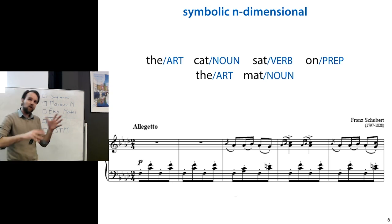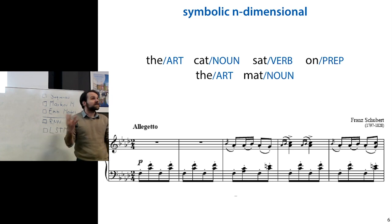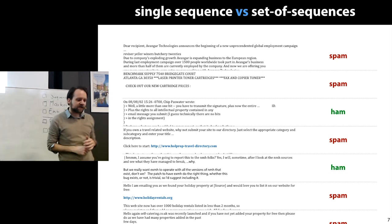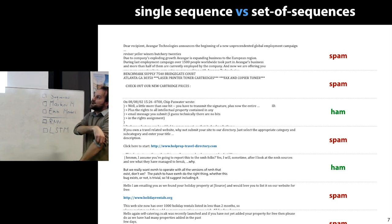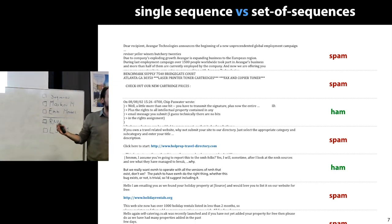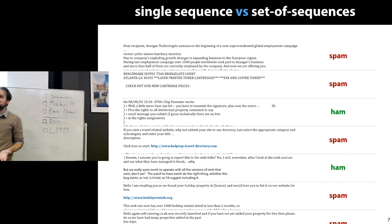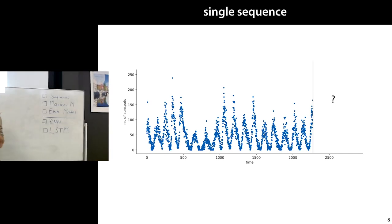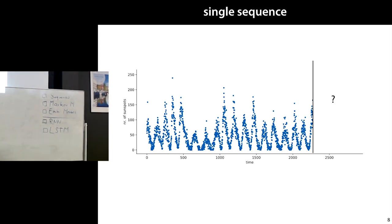An important question is whether your dataset as a whole is one sequence or a set of sequences. For example, in spam classification on raw email text, every email is a sequence with a class label — so the dataset is a bunch of sequences each to be classified. On the other hand, if we want to predict the number of sunspots next week, our entire dataset is one big sequence, and we use that to predict the next value. These are two different cases.